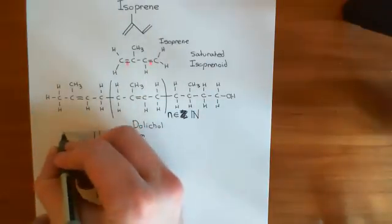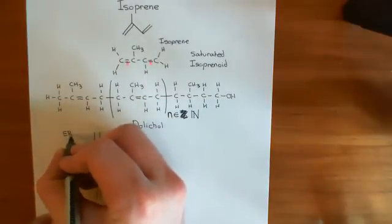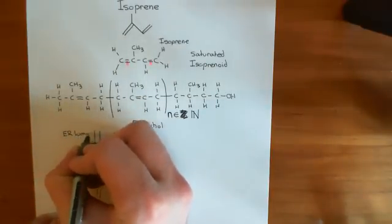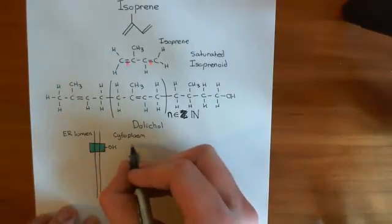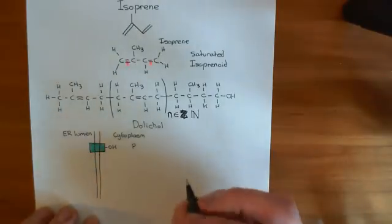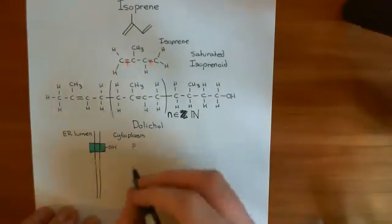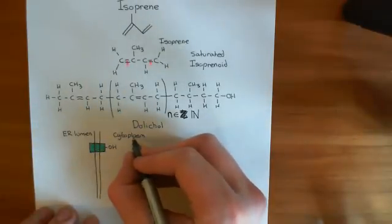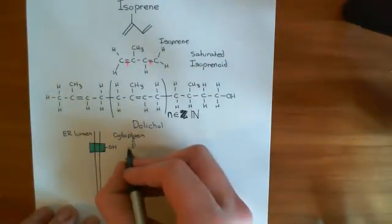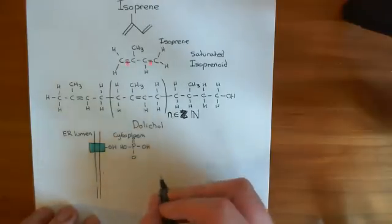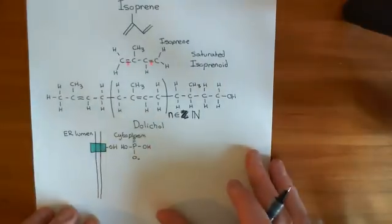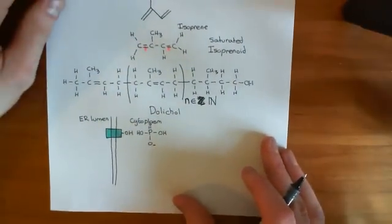So what we're now going to do is we're going to add a phosphate group onto that hydroxyl group. So let me show a phosphate group here. A phosphate group consists of a phosphorus atom double bonded to an oxygen. And then we have two hydroxyl groups coming off here, and then an oxygen singly bonded to it with a negative charge on there. So there's our phosphate group.